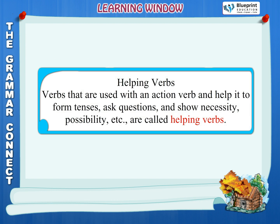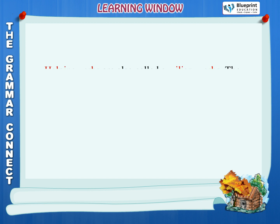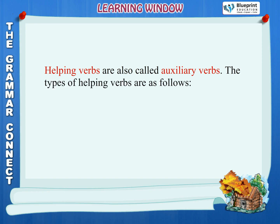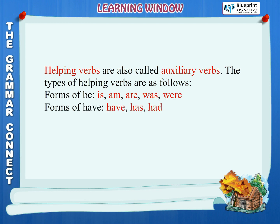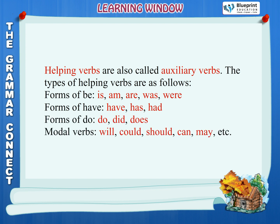Helping verbs: Verbs that are used with an action verb and help it to form tenses, ask questions and show necessity, possibility, etc., are called helping verbs. Helping verbs are also called auxiliary verbs. The types of helping verbs are: forms of be (is, am, are, was, were), forms of have (have, has, had), forms of do (do, did, does), and modal verbs (will, could, should, can, may, etc.).